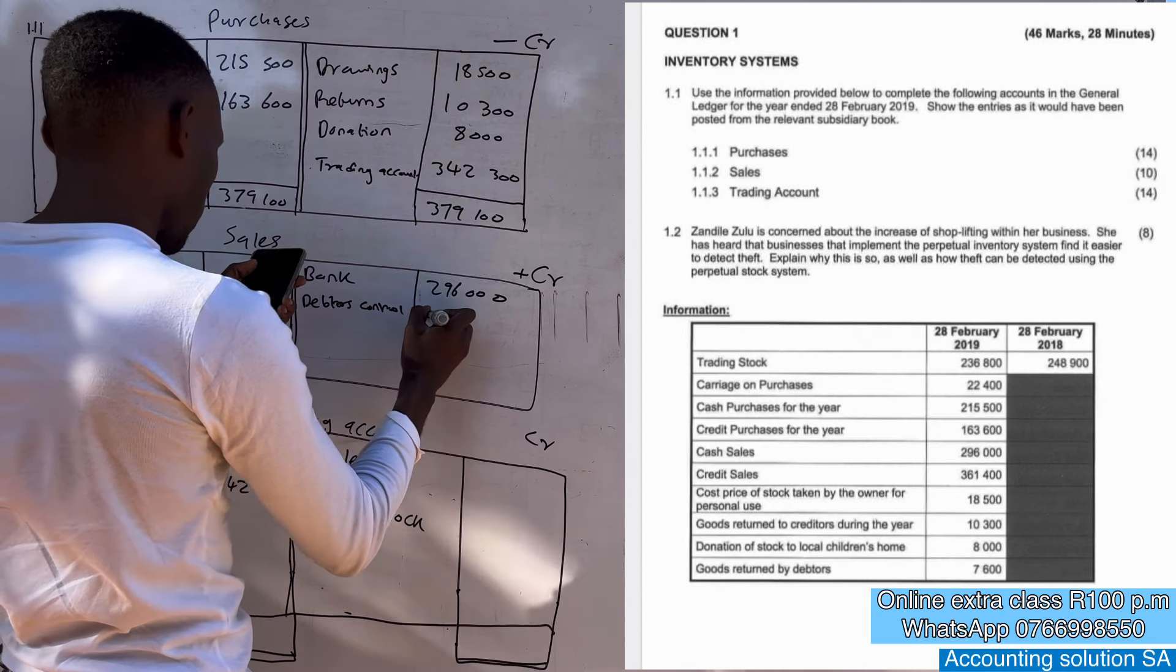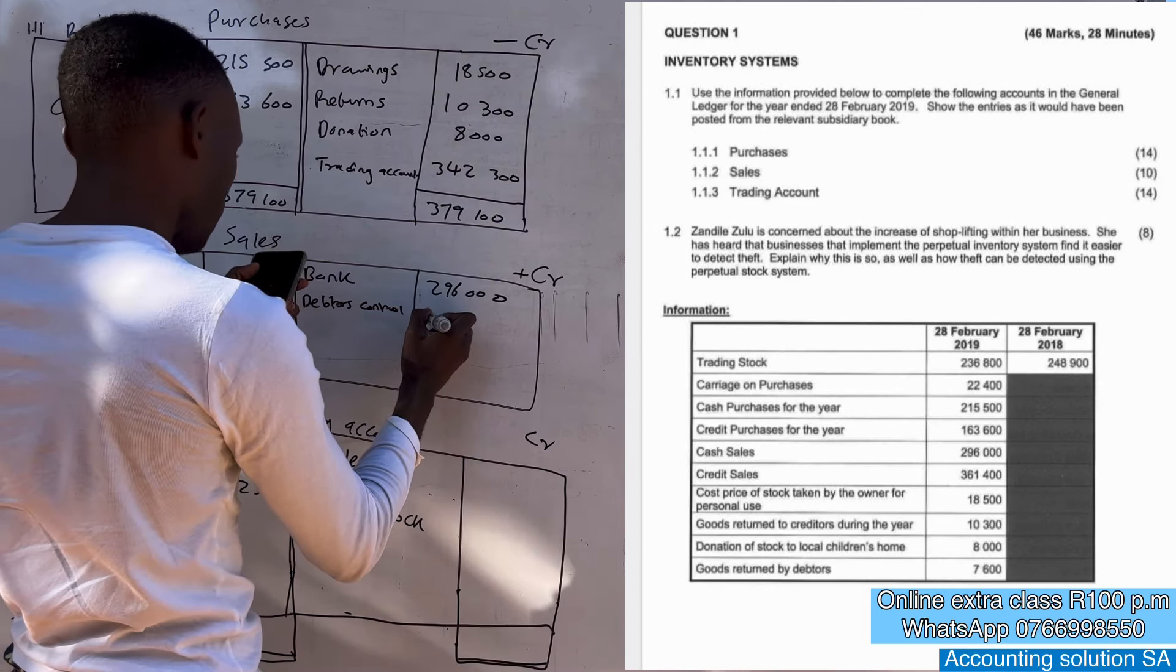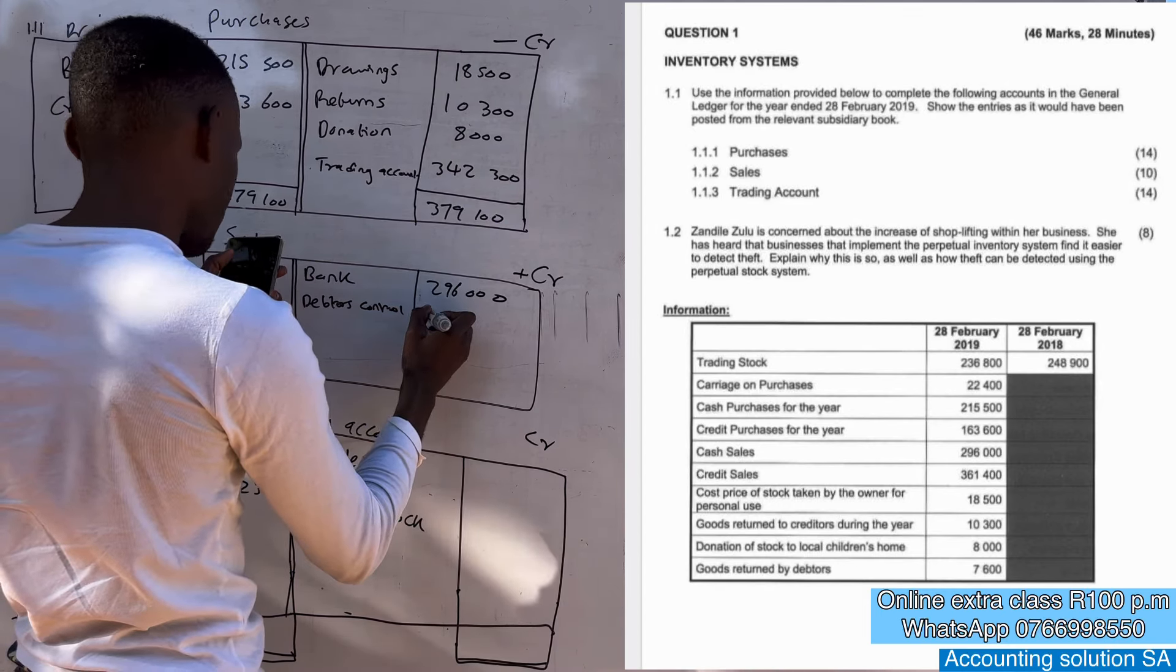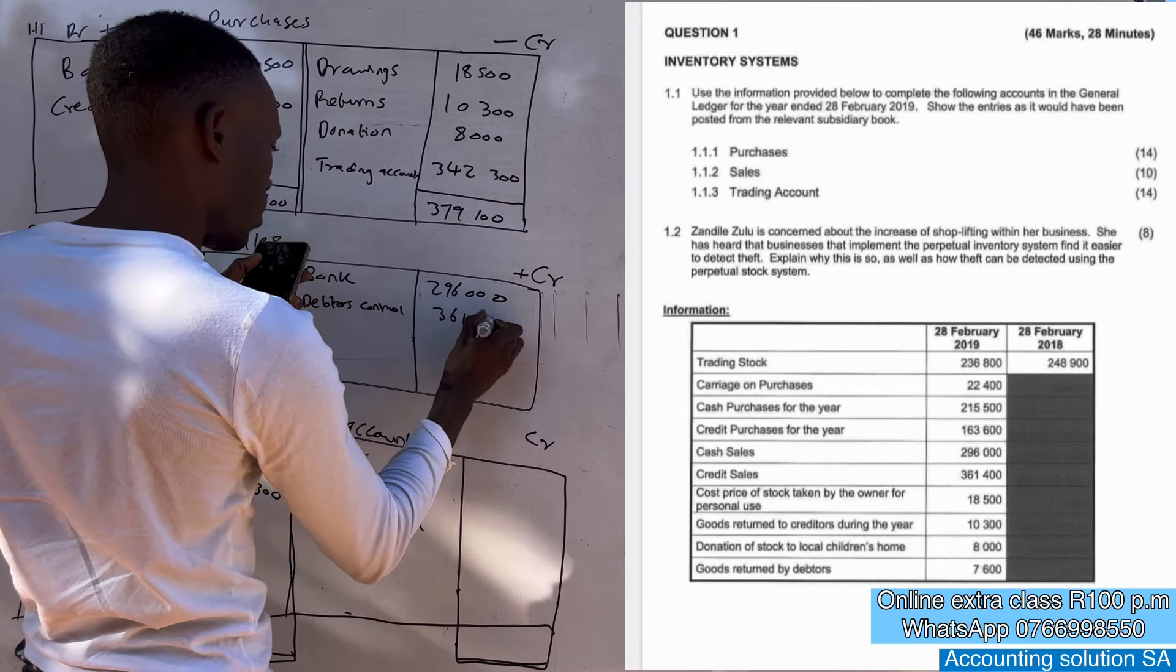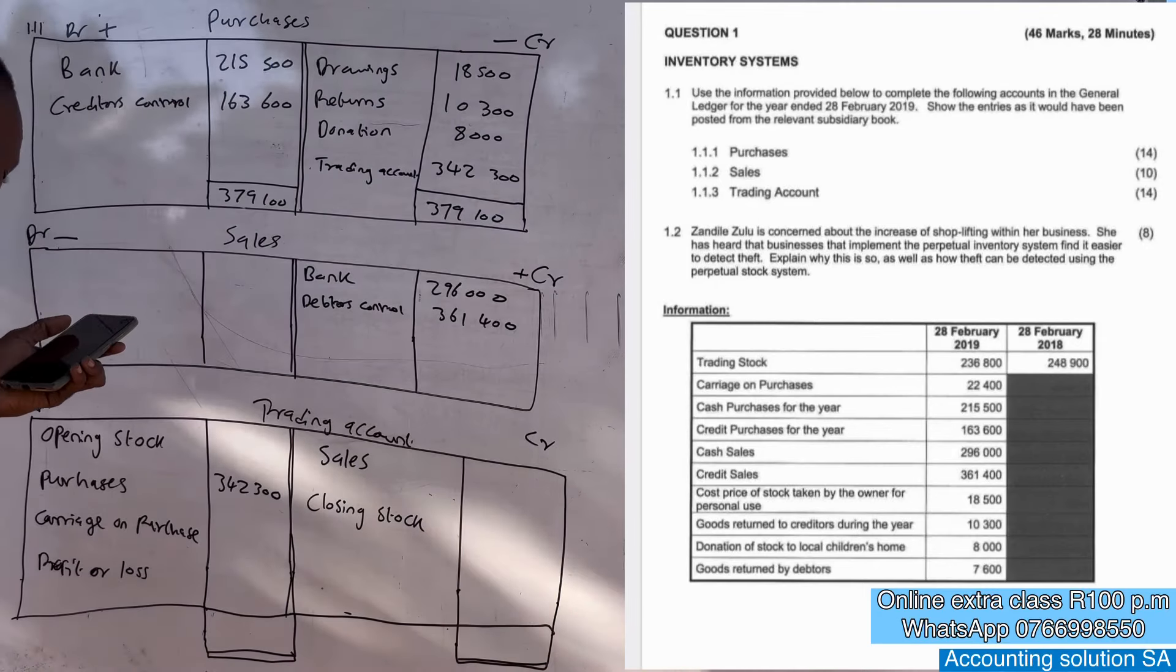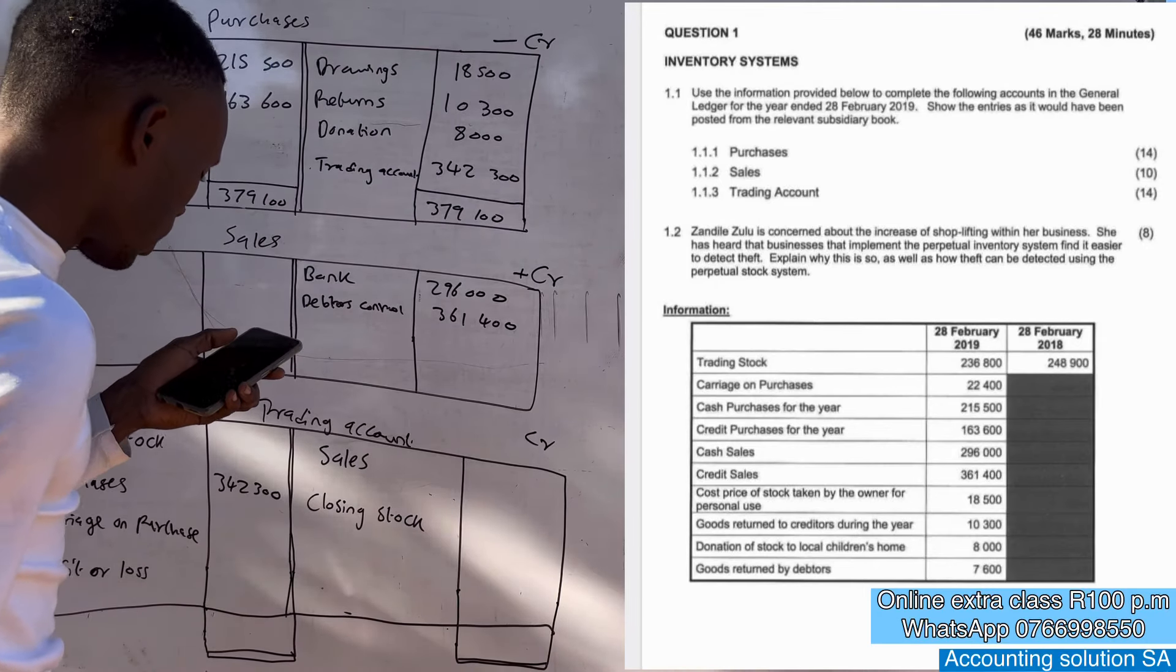And we also have a credit sales which is debtors control, debtors control, which amount is 361,400.